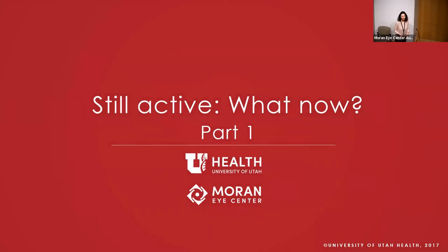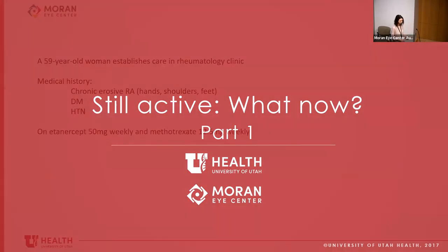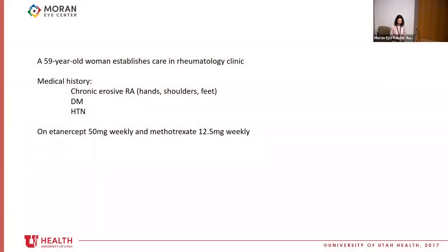This case presentation is called 'Still Active, What Now? Part 1.' This is a 59-year-old woman who first comes to establish care in rheumatology clinic. She has a history of chronic erosive rheumatoid arthritis, previously treated in Mexico, primarily affecting her hands, shoulders, and feet. She also has diabetes and high blood pressure. She is on etanercept (Enbrel) weekly and methotrexate weekly, and after one year with reasonable control of her joints, her methotrexate is stopped.